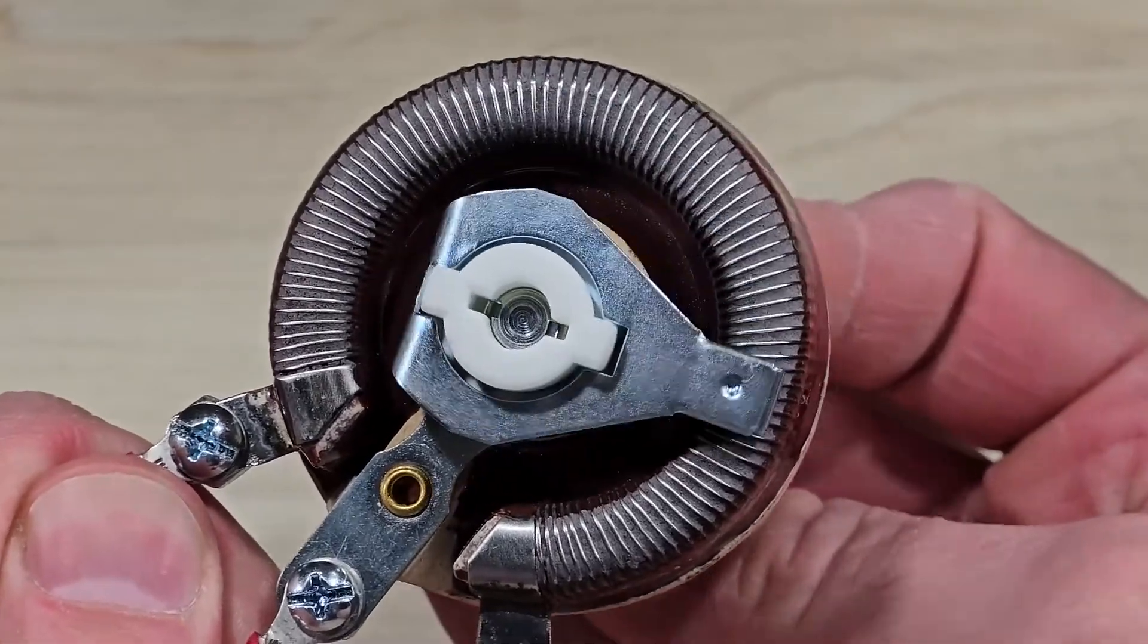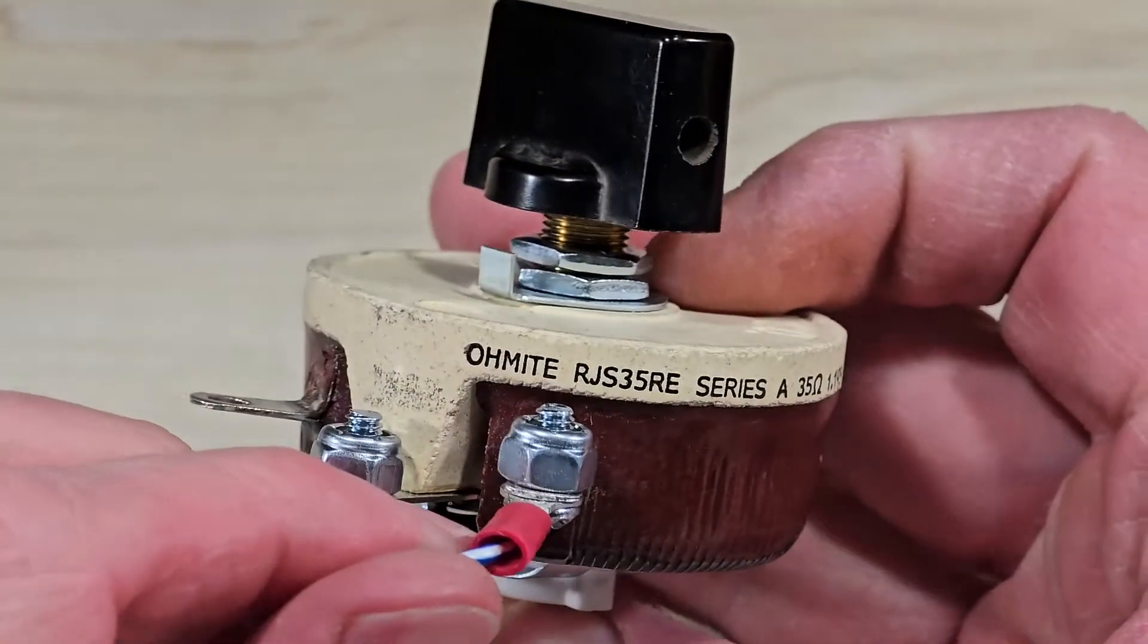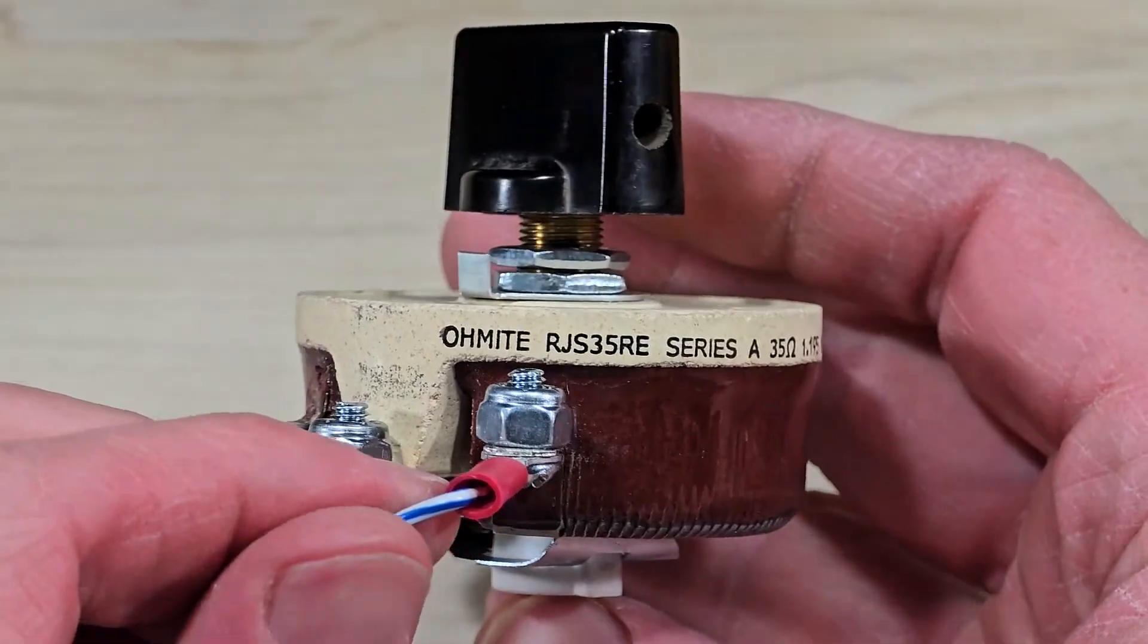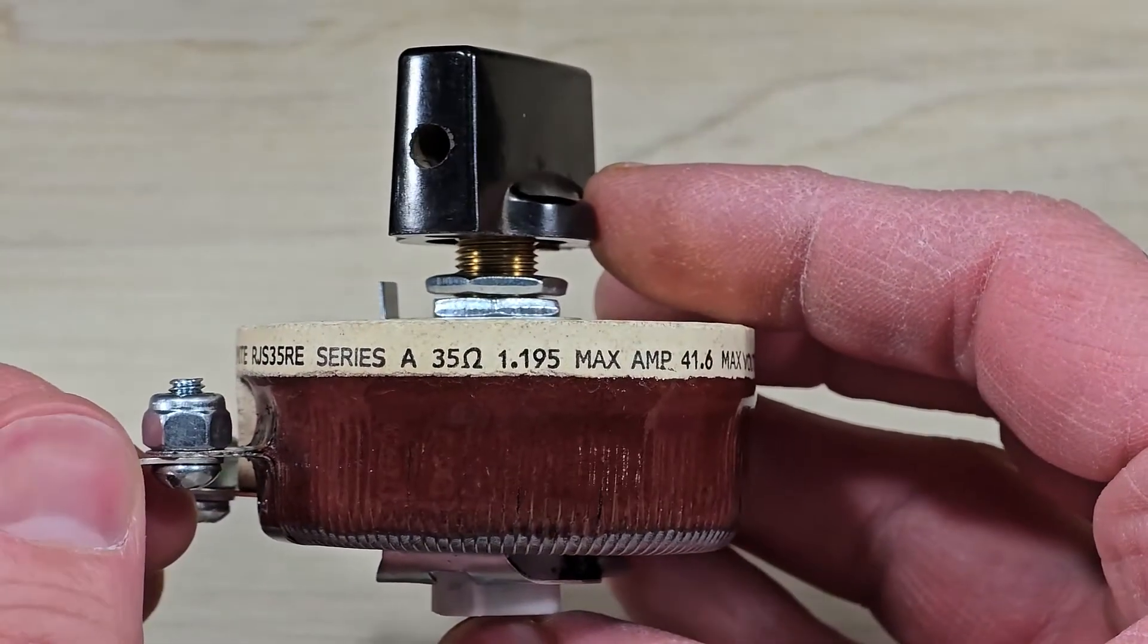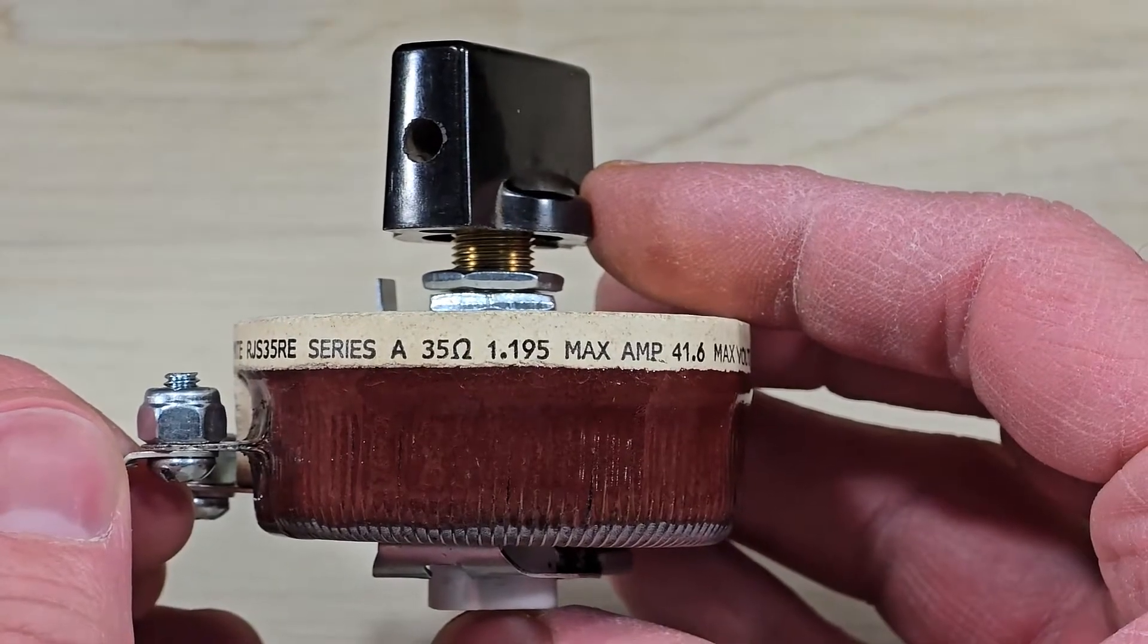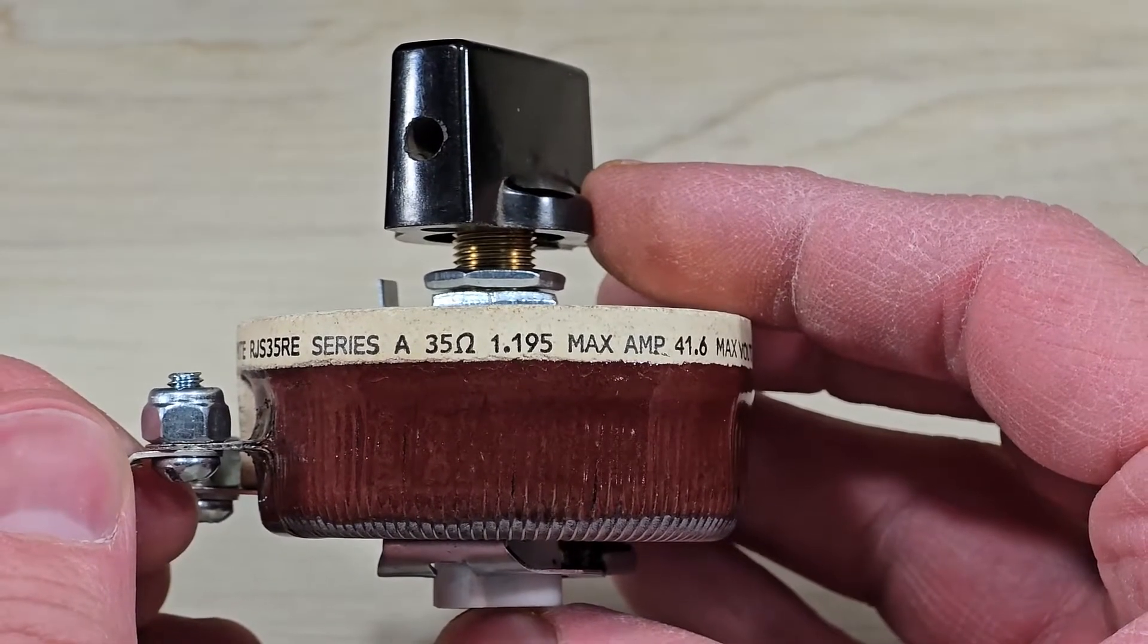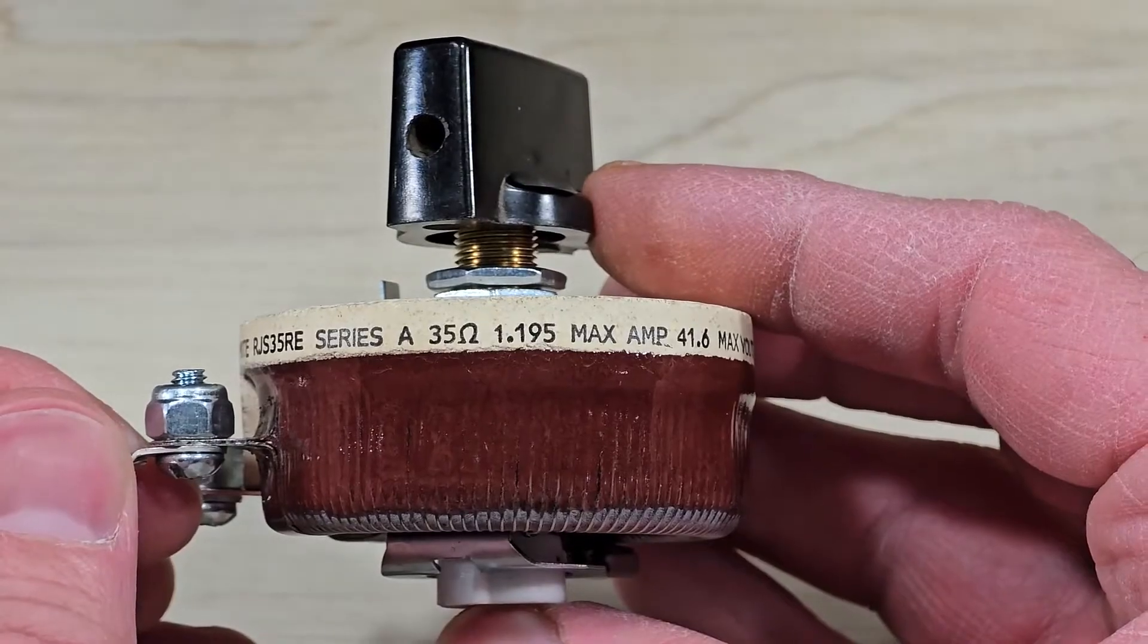This is a 50-watt potentiometer, otherwise known as a variable resistor. It is manufactured by Ohmite. It has a 35-ohm resistance and a 1.195 amp maximum continuous current rating. It is that current rating that I'd like to focus on today.